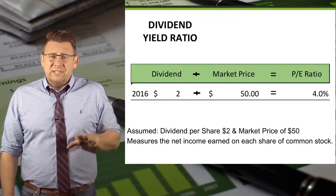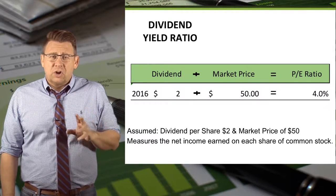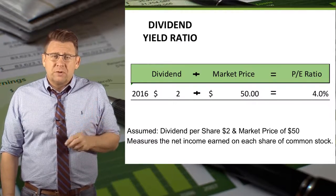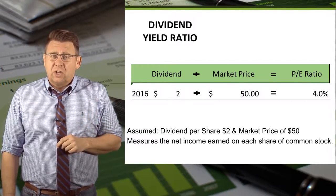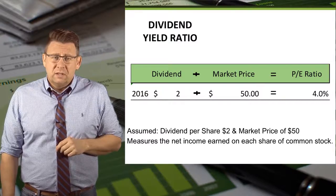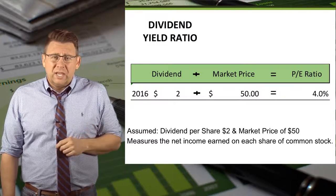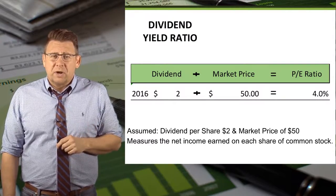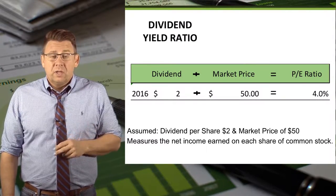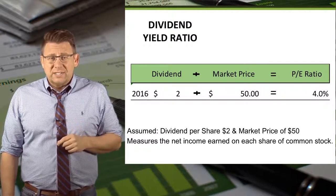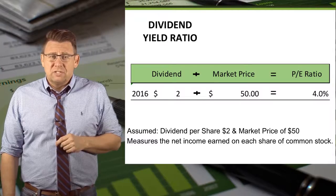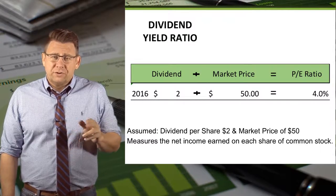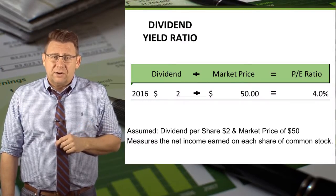This means that investors are earning 4% per dollar invested, assuming a constant stock price. If the stock price also goes up, then the return is even higher.